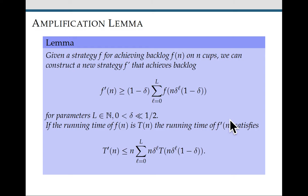The key to this proof is what we call the amplification lemma. Let me tell you what it says. Given a strategy f for achieving backlog f of n on n cups, we can construct a new strategy f prime that achieves backlog f prime of n, at least this discounted sum of f applied to some sets that are smaller than size n. And the running time of f prime is going to satisfy this relationship here.